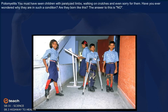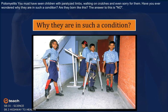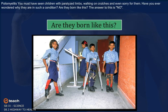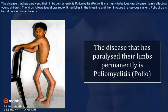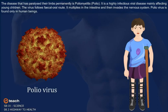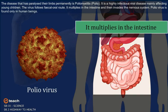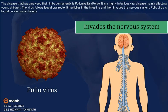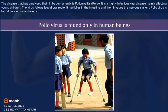Poliomyelitis: You must have seen children with paralyzed limbs walking on crutches. The disease that has paralyzed their limbs permanently is poliomyelitis, i.e. polio. It is a highly infectious viral disease mainly affecting young children. The virus follows the fecal-oral route. It multiplies in the intestine and then invades the nervous system. Polio virus is found only in human beings.